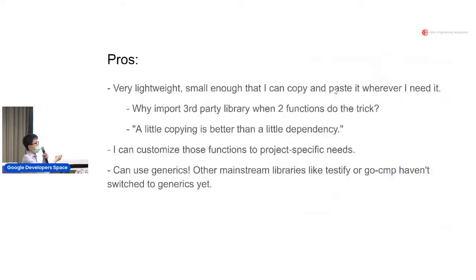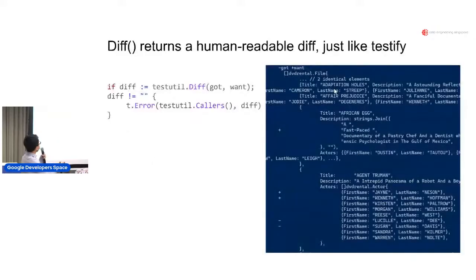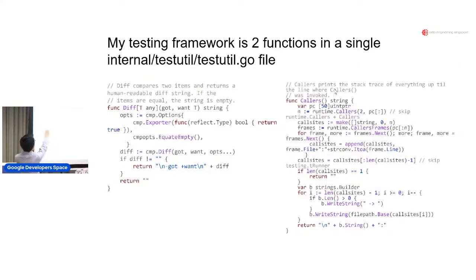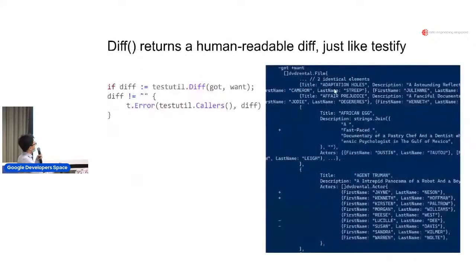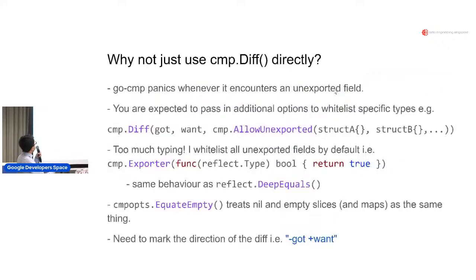And you can use generics. Other mainstream packages like testify or go-cmp haven't switched to generics yet, although I believe they want to switch to it. You can see here, it takes in a generic argument where they must be the same argument basically. So if they're not, then it's caught at compile time. You can't compare a pointer with a struct basically.